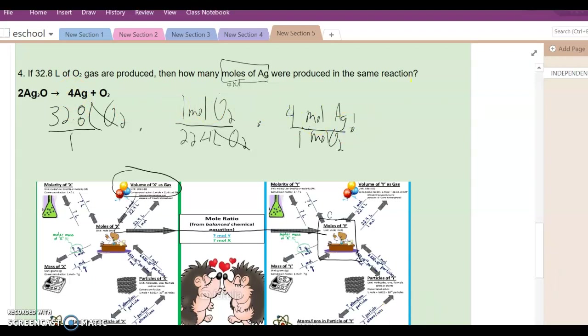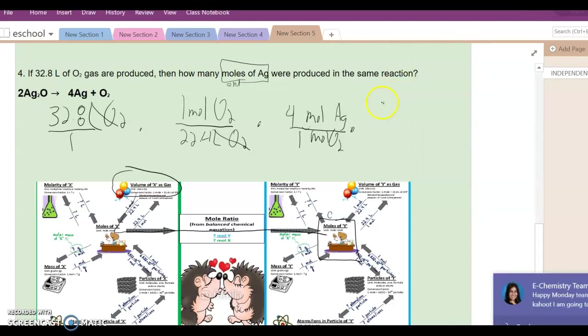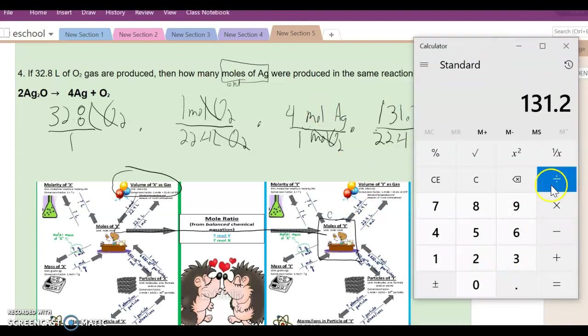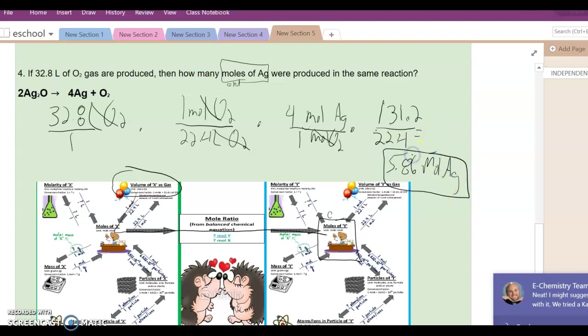Beautiful, now let's do some math. I've got 32.8 times 4, 131.2, divided by 1 times 22.4 times 1, which is going to be divided by 22.4. And that is going to give us our final answer in moles of Ag. What is that? 131.2 divided by 22.4, 5.86 moles of Ag.